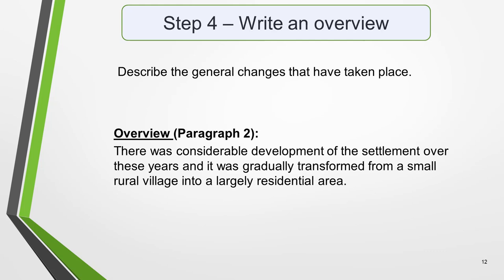In the second paragraph, you should describe the general changes that have taken place. The detail comes later in the essay. For example: 'There was considerable development of the settlement over these years, and it was gradually transformed from a small rural village into a largely residential area.' Two sentences would be better than one for the second paragraph, but we'll be getting into the detail if we say more about these maps at this point, so we'll leave the overview as one sentence.